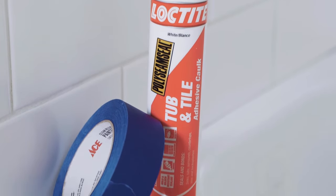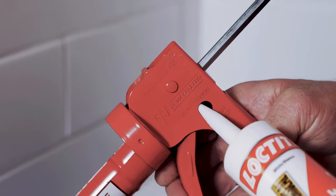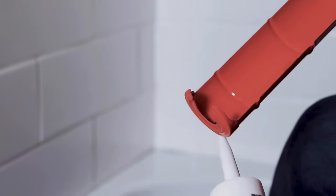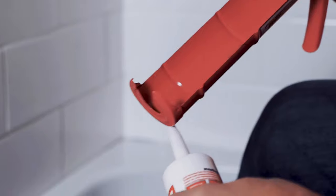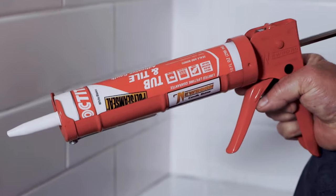You want to use something that is designed for bathrooms, a tub and tile caulking that will stick. That's an adhesive caulk, but with a latex caulk, it's easier to tool with your finger. It's a good idea to keep a wet rag and I'll explain why in just a second.